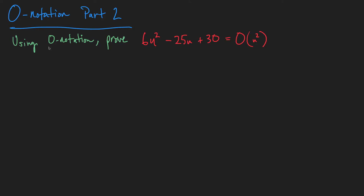What we are going to do is use Big O notation to prove something else. We have a function here, and we want to prove that it is O(n²). Right off the bat, we can already see it's O(n²) because n² is the fastest growing term, but we need to prove that formally.